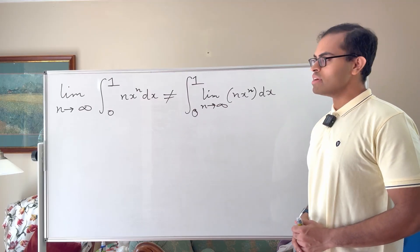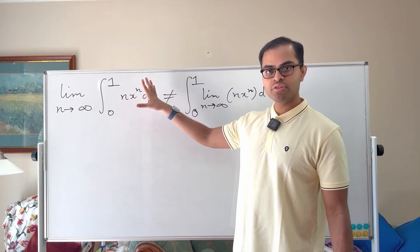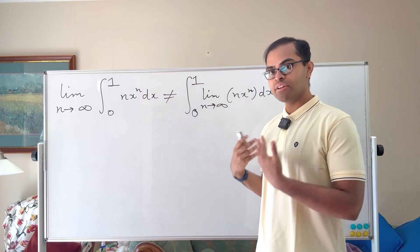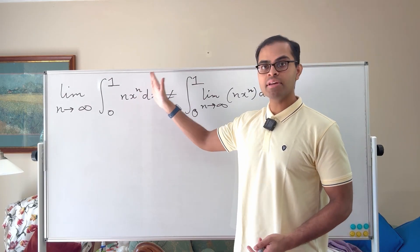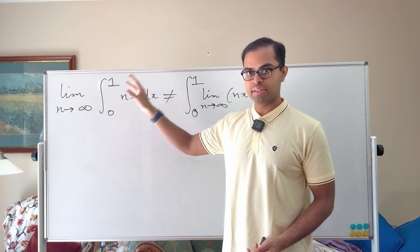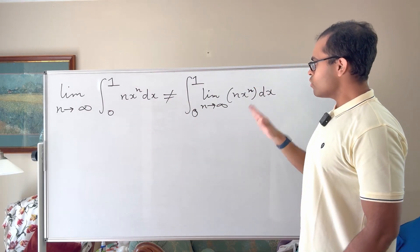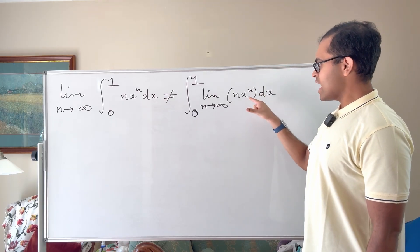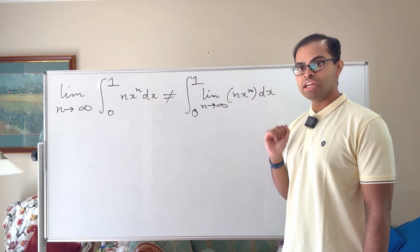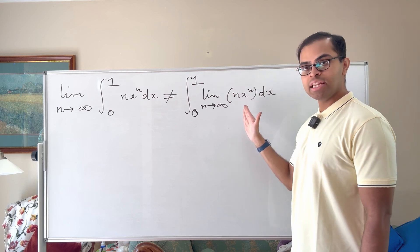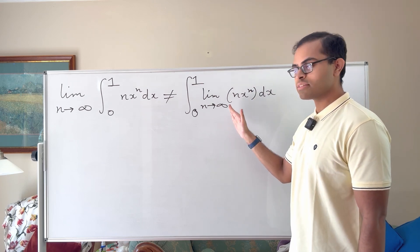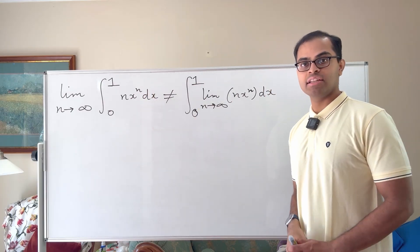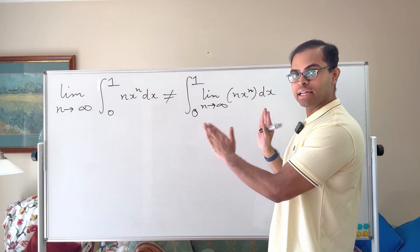Basically what we have is we're taking the integral from 0 to 1 of nx to the n dx. That depends on n, so for each n we get a different answer — it's a sequence of numbers, and we're taking the limit of that sequence. That's the left-hand side. The right-hand side is what we get when we take the limit inside the integration: for each fixed x we take the limit as n goes to infinity of nx to the n, which gives a function of x, and then we take the integral of that function. This is not equal to the left-hand side, so we cannot interchange the limit and integration.